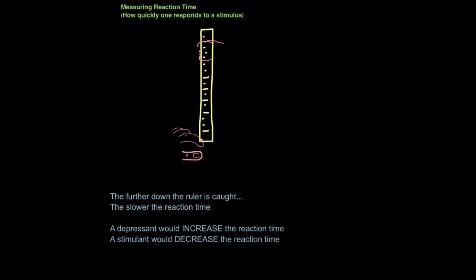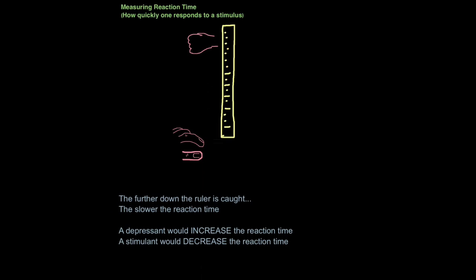Now, without any warning, person 1 will drop the ruler. The job of person 2 is to catch the ruler as quickly as they can. So the further down the ruler falls, the slower the reaction time of that person. So if someone was to catch the ruler here, they'd have pretty good reflexes. If someone allowed it to fall this far down, you can assume their reaction time isn't quite as fast. So the further down the ruler is caught, the slower the reaction time.